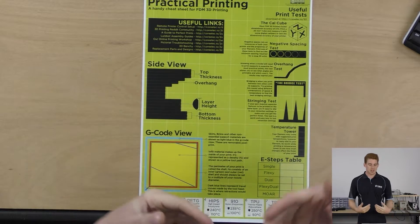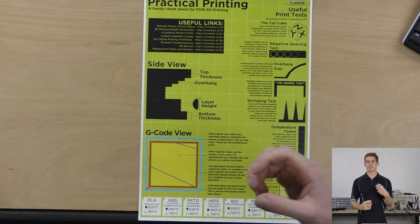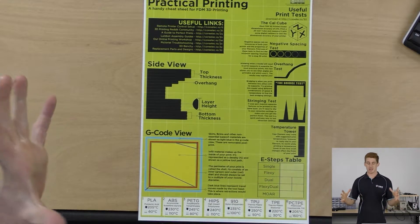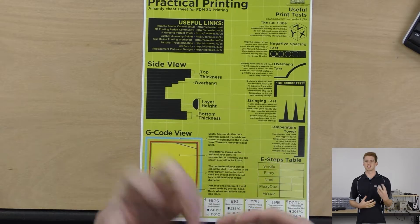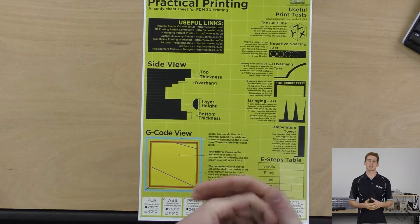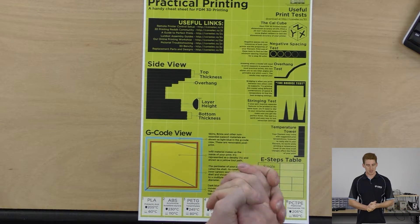Next up, which is worth a mention I think all the time, is the 3D Benchy, which is just a little boat that you can print that tests a whole different selection of settings on your printer. It's a really cool little print to do just to see what the finished product looks like. You can test different filaments, test your printer, take a picture and share it.